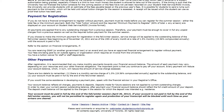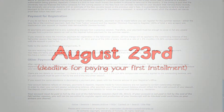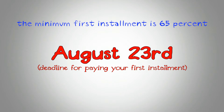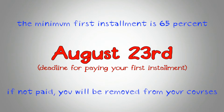The deadline for students to pay the first installment of their fees is August 23rd. The minimum first installment is 65% of your fees for the year. This amount will be printed at the bottom of your invoice. If your payment has not been received by this date, you will be removed from your courses.